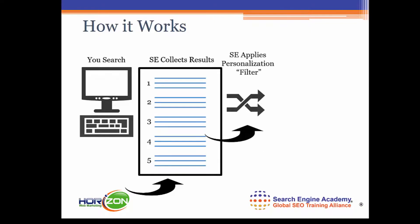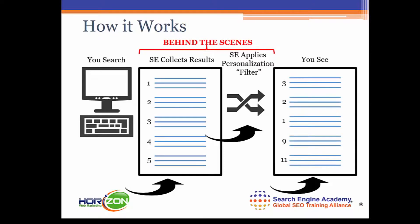What happens nowadays is that a search engine applies something called a personalization filter. Both this collection of results and the filter are things that occur before you see anything — it happens behind the scenes in just a fraction of a second while you're waiting for your results to appear. Finally, the search engine will show you results after applying this personalization filter — results it thinks are more personal to you based on your preferences. So you may see a different order of results, sometimes even a different set of results than what the search engine collected when it didn't know anything about you.